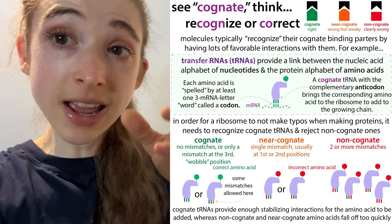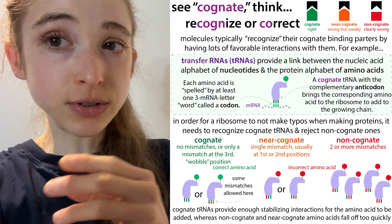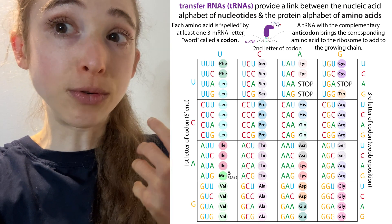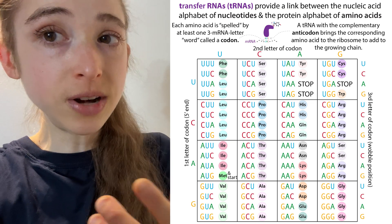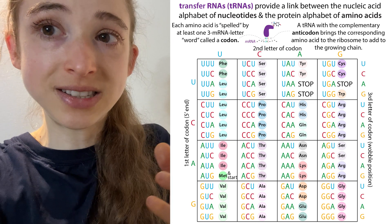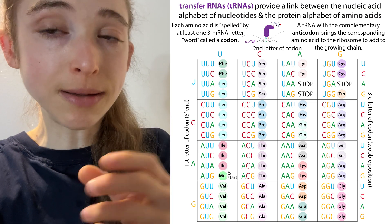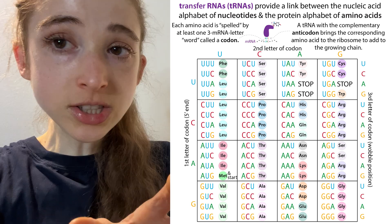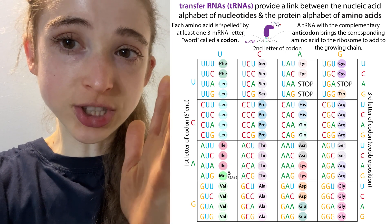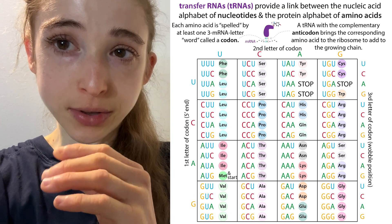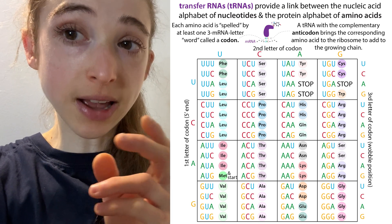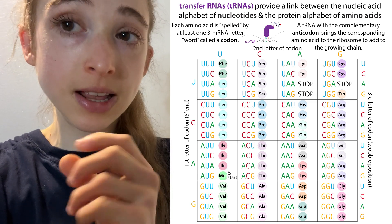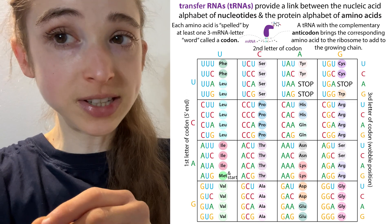The cognate tRNA is going to be matching or complementary at least in those first two positions. The third position is the wobble position where you have a little more flexibility. This allows you to have a smaller number of tRNAs decode a larger number of codons, so you don't have to have 64 tRNAs in order to specify those 20 amino acids. If you look at a codon table, the three-letter positions specify which amino acid is encoded, and you'll see that multiple codons specify a single amino acid — typically having the first two positions be the same for a given amino acid, but with variability in the third position because that's the wobble position.